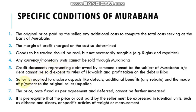Number six: the seller is required to disclose aspects like defects in the product, additional benefits, any rebate expected in the future, and the mode of payment to the original seller and supplier. It is possible that the current seller has some credit deals with the original seller, and if the product has been taken from someone, that situation must be explained.